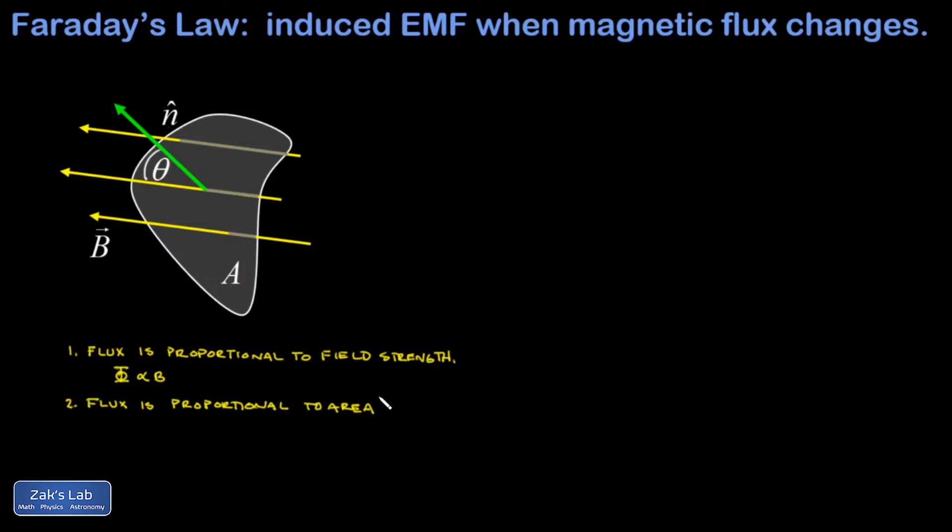Second, flux should be proportional to area. If I doubled the area captured in a loop and kept the magnetic field the same, then of course we'd capture twice the magnetic field lines. And third, flux should be proportional to the cosine of that angle theta.